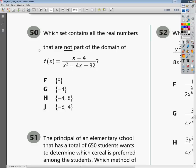This is the Tennessee Algebra 2 End-Course Practice Test, question number 50. The question asks which set contains all the real numbers that are not part of the domain, and they give you the function x plus 4 over x squared plus 4x minus 32.